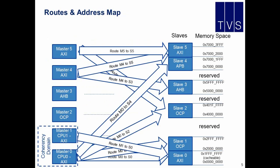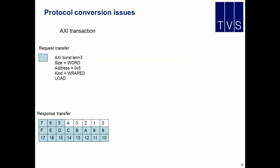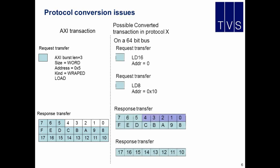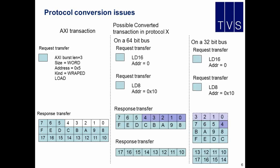There are lots of routes and address maps all the way across the interconnect — I'm going to stop using the word 'bus' because it's not big enough anymore. As you move across the interconnect from one protocol to another protocol, you get translation issues. For example, going from an AXI transaction onto a 64-bit bus, or potentially onto a 32-bit bus. Obviously what you get is protocol conversion issues as you move across the interconnect from one protocol to another.